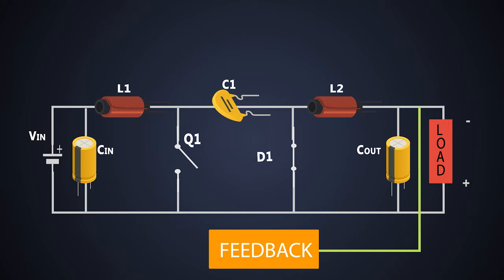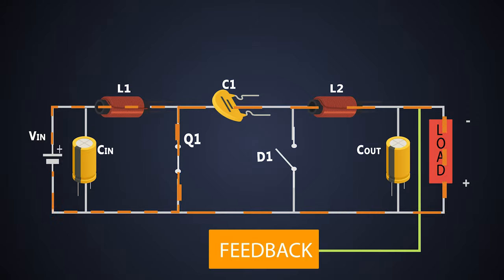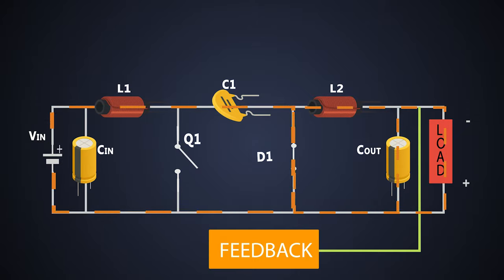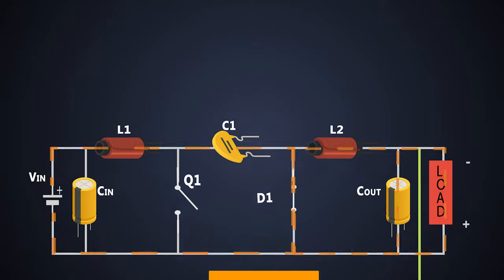This third and fourth cycle repeats throughout the process and we get the regulated inverting output voltage. In simpler words, when the MOSFET is ON, inductors L1 and L2 store energy from the input and series capacitor respectively. When the MOSFET is OFF, these inductors release the stored energy — L1 charges the series capacitor and L2 provides the output power. And this is how the Ćuk converter works.